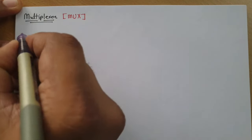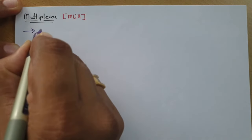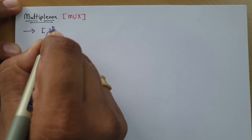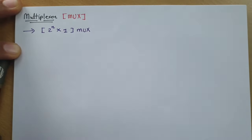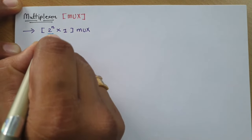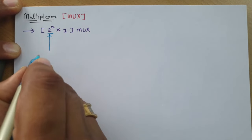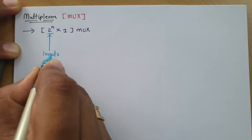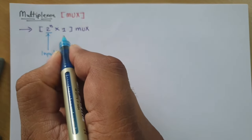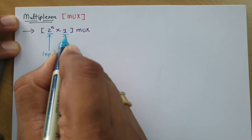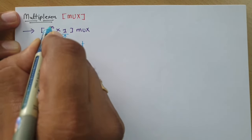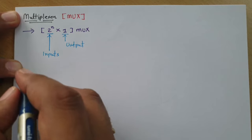Let me explain the basic meaning of multiplexer. Usually you will find a multiplexer given as 2 to the power n cross 1 MUX. Here, 2 to the power n explains the number of inputs, this 1 explains the output — so there is only one output — and this small n explains the number of selection lines.